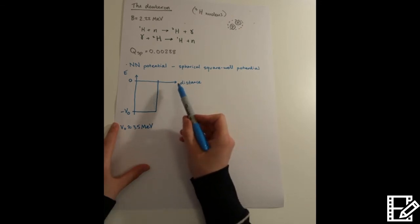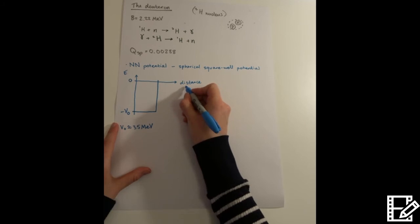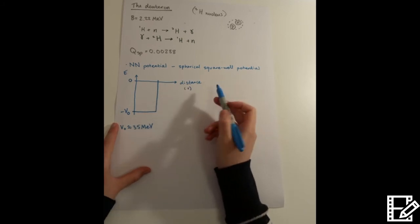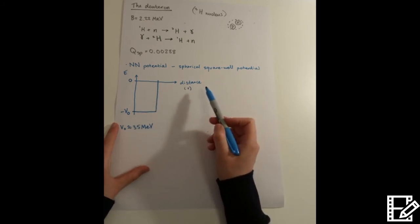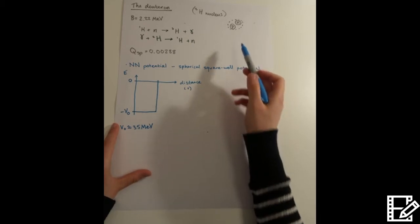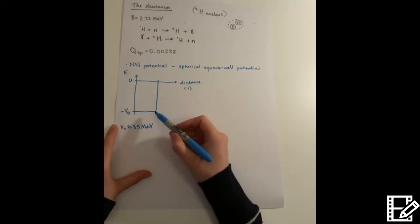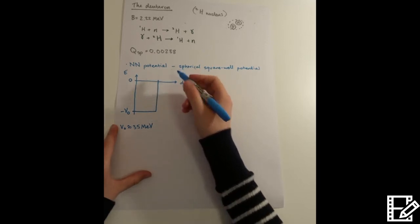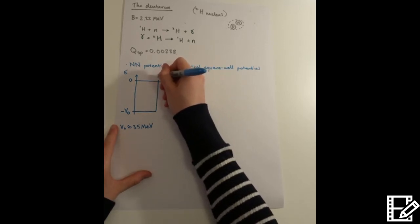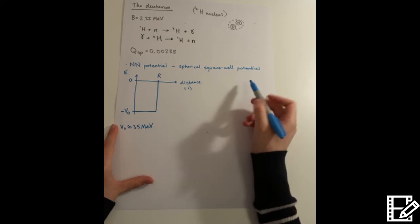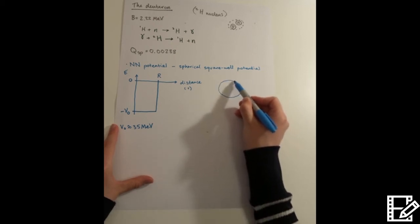Now, this distance, or small r, represents the separation between the proton and the neutron in the deuteron nucleus. At this value, we have R, which essentially represents the diameter of the deuteron.